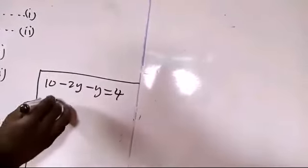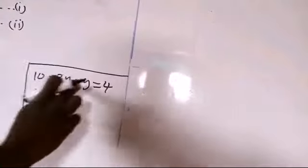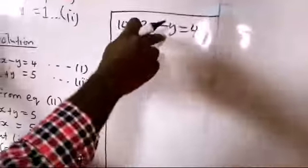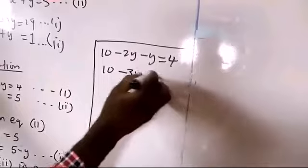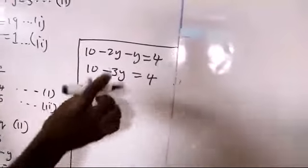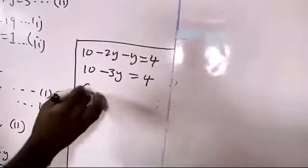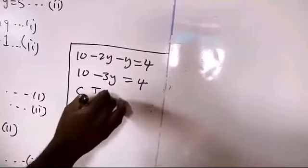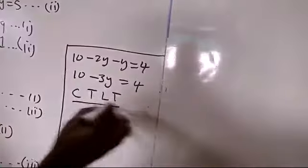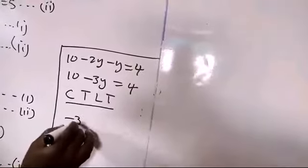Here it's going to be 10. Now, -2y - y, that is, the coefficient here is -2, -1. -2 - 1 is -3. So, it gives -3y = 4. Now, collecting the like terms, this is going to be -3y equals to 4 minus 10.